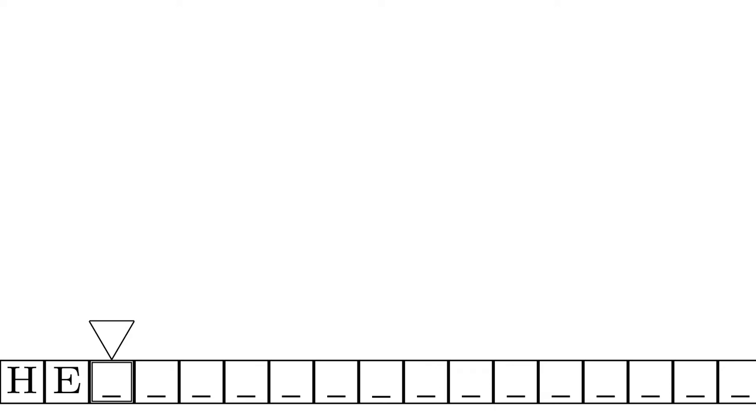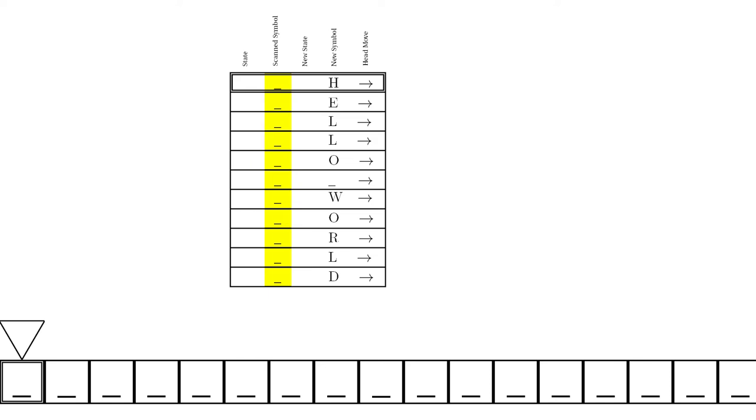It will keep replacing the blanks with the next letter in Hello World and moving to the right until it writes the D, at which point it halts. Since it's always scanning the blank symbol, the machine has to decide what symbol to replace the blank with based solely on its state.